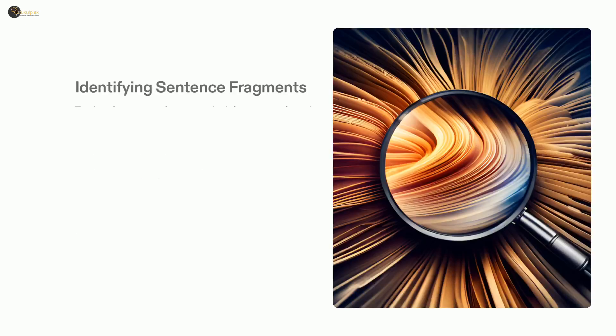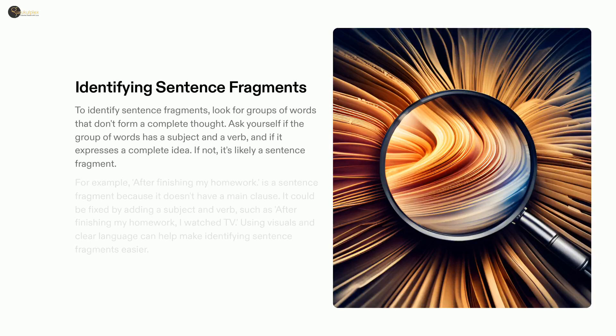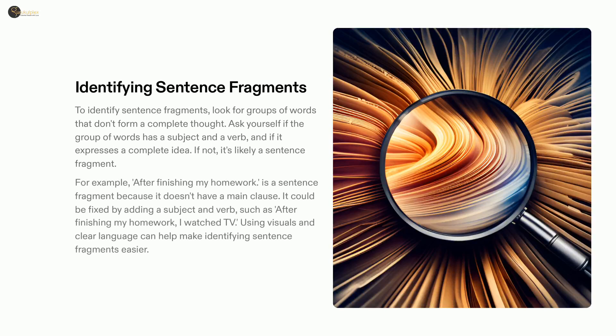When identifying sentence fragments, the best way to proceed is to ask yourself if the words form a complete idea, having a subject and a verb. To demonstrate, consider the sentence 'after finishing my homework.' Here, a main clause is missing, so it is a fragment. To fix it, one can add a subject and verb, like in 'after finishing my homework, I watch TV.' Visuals and straightforward language make recognizing sentence fragments easier.